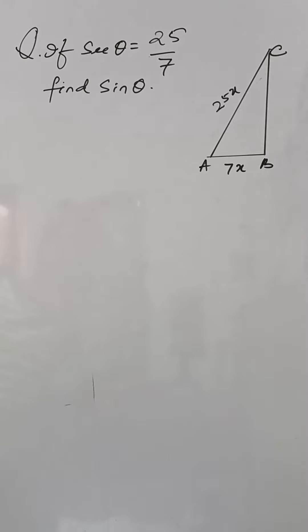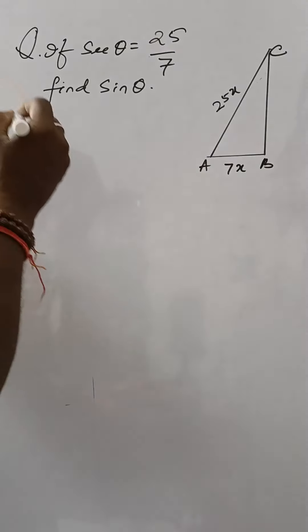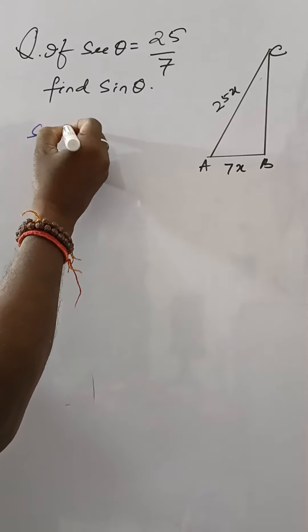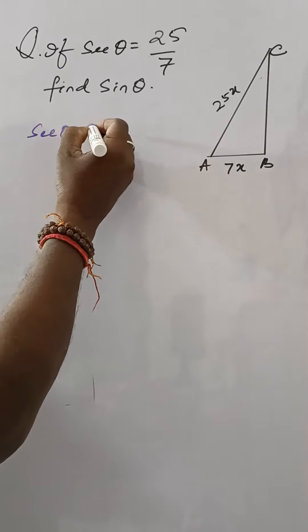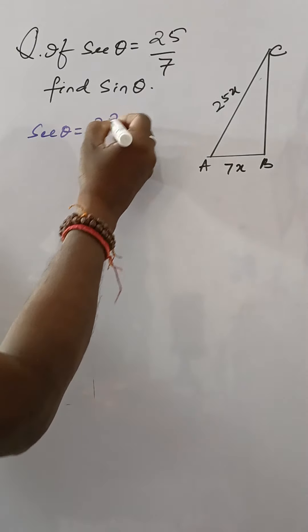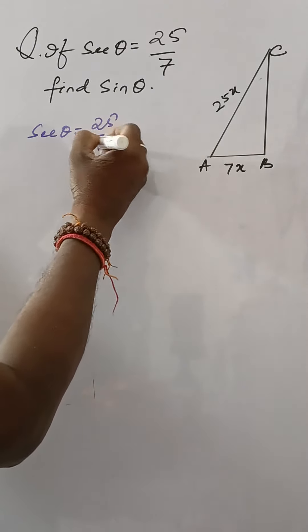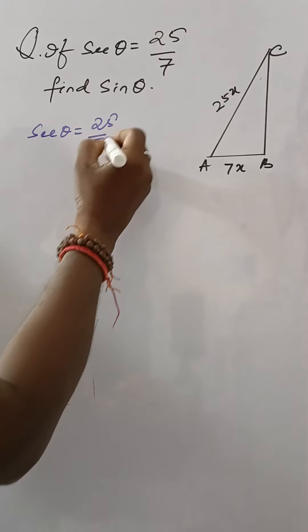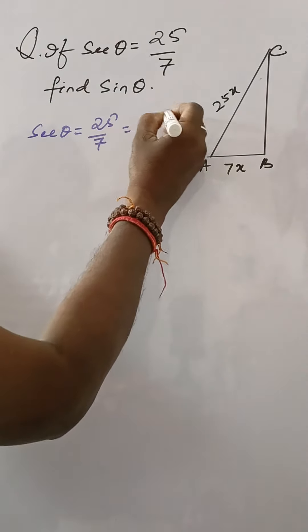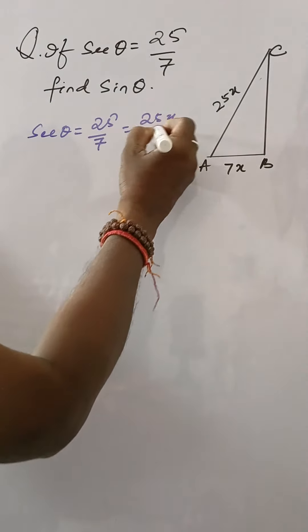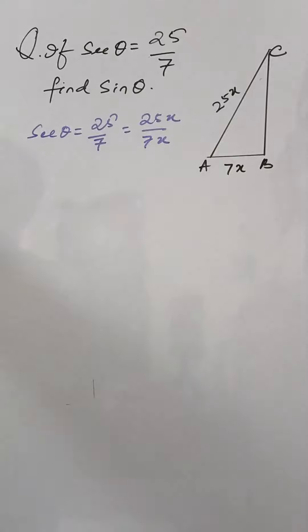If sec theta is equal to 25 by 7, find sine theta. Referring to the figure, sec theta is equal to 25 by 7. We can also write this as 25x by 7x because they are in ratios.